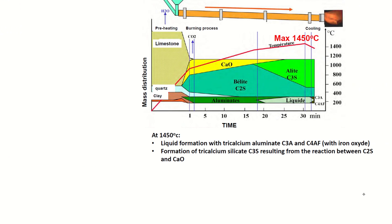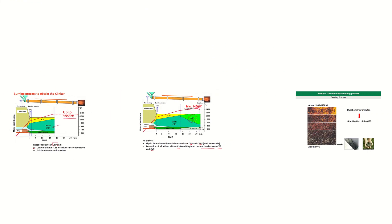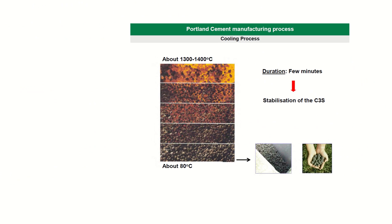At the final step of the process, at 1450 degrees Celsius, we start noticing the formation of C3A, C4AF, and also C3S starts to be produced. That C3S is produced due to the reaction between the C2S produced at 1350 degrees Celsius plus some of the remaining calcium oxide. Once the heating is done, we need to cool down the compounds that are produced, in order to stabilise our C3S.